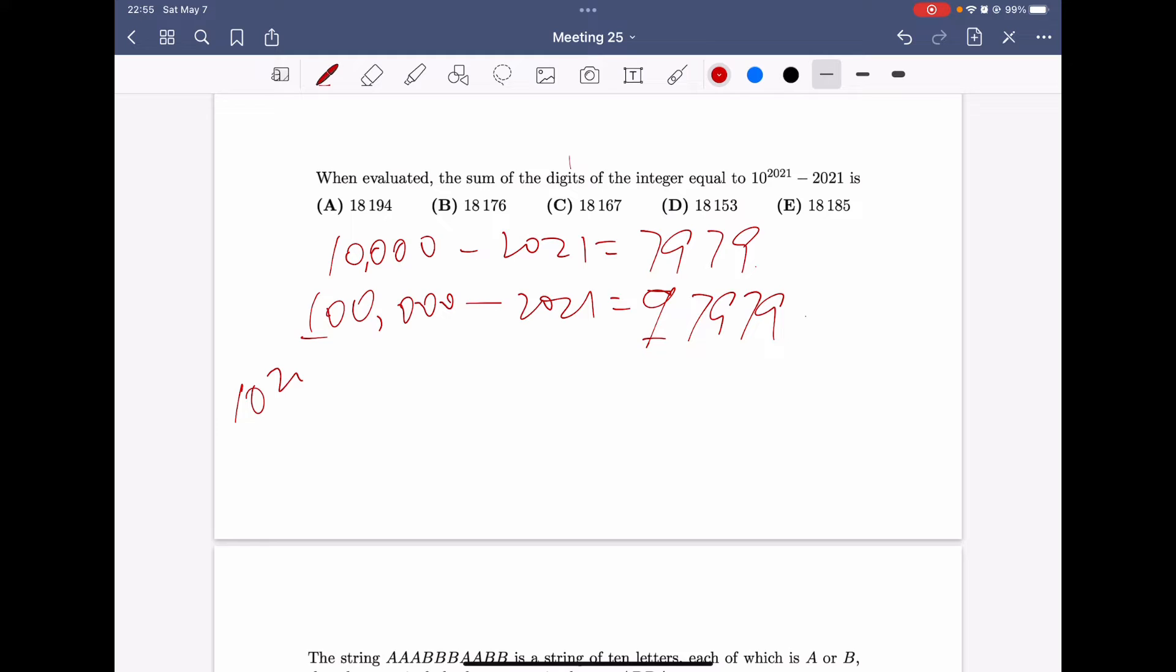Therefore, 10 to the power of 21, which is there are, first there is a 1, and there will be 2021 zeros here. So, minus 2021, there will be 9, 9, 9, 9, 9, a lot of 9s, and ends with 7979.